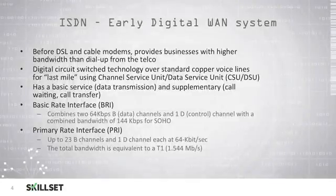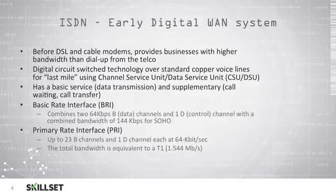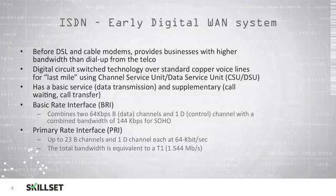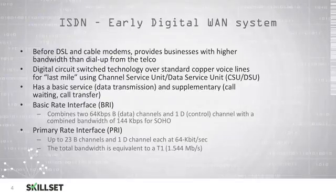ISDN was one of the early digital wide area network systems. ISDN technology was available before DSL and cable modems and it allowed businesses to have higher bandwidth than dial-up. This type of service was provided by the local telephone company. ISDN was a digital circuit-switched technology that utilized standard copper voice lines for what is known as the last mile, or the short distance between the local central office and the customer's location, and this utilized CSU-DSU technology, or Channel Service Unit Data Service Unit.